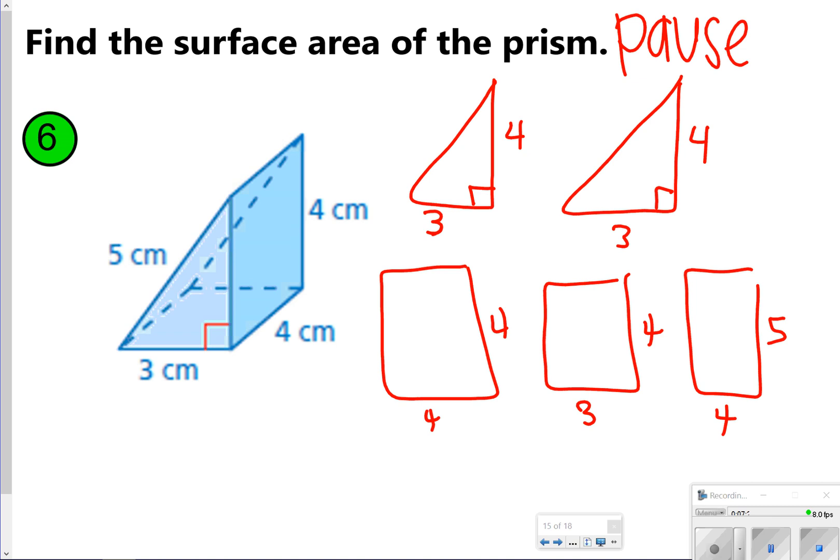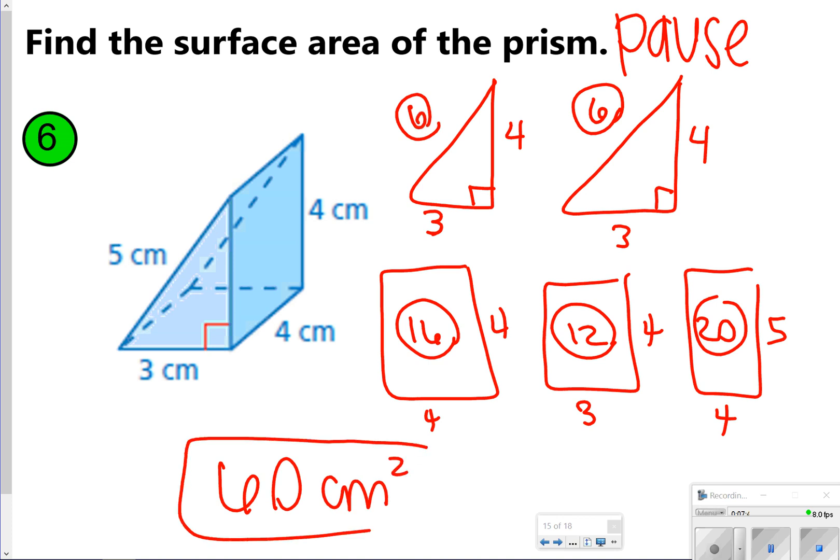So 3 times 4 divided by 2, again that's going to give us 6s for the triangles. 4 by 4 is 16, 3 by 4 is 12, and 5 by 4 is 20. So I have 6 plus 6 plus 16 plus 12 and plus another 20 is going to give me 60 centimeters squared. How did you do?